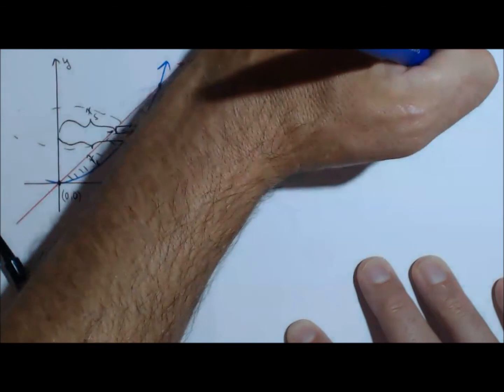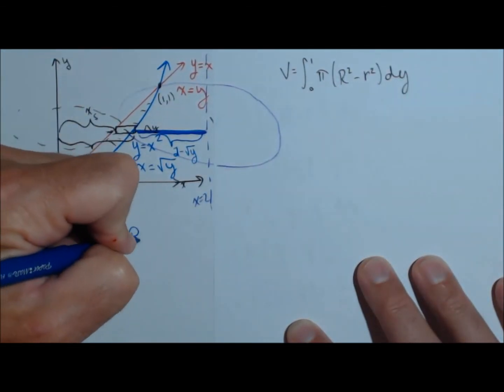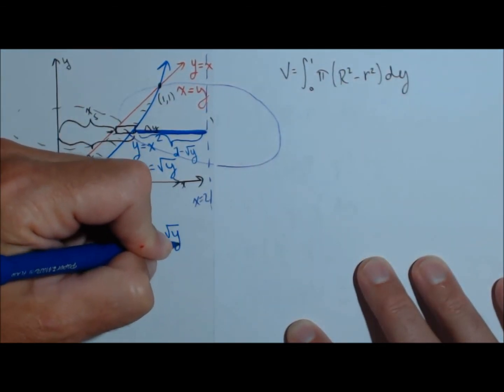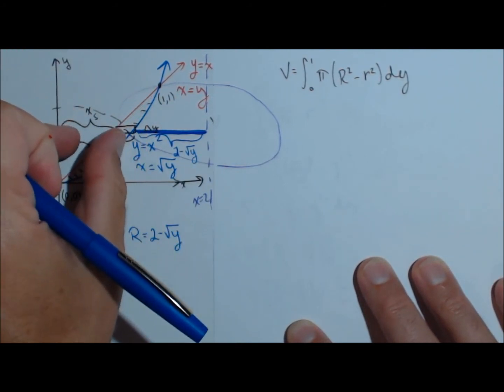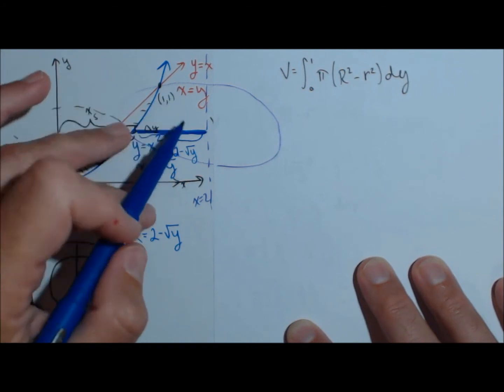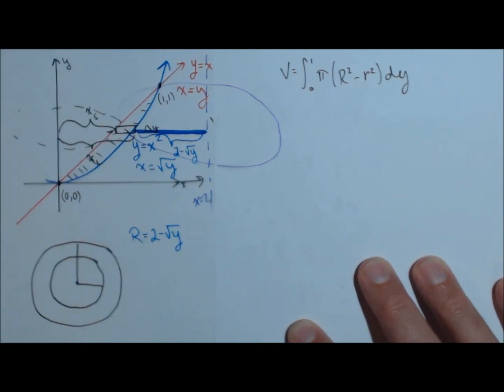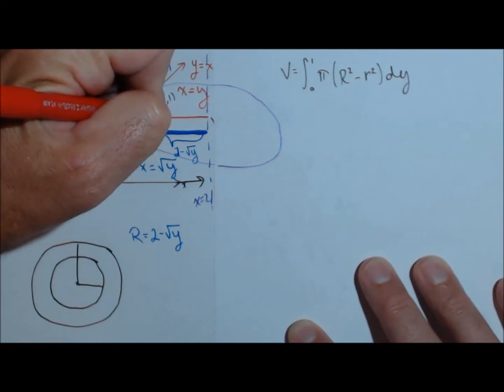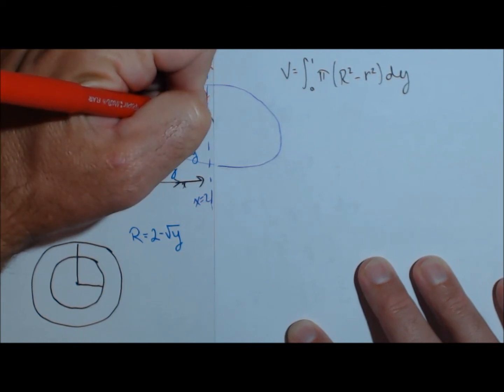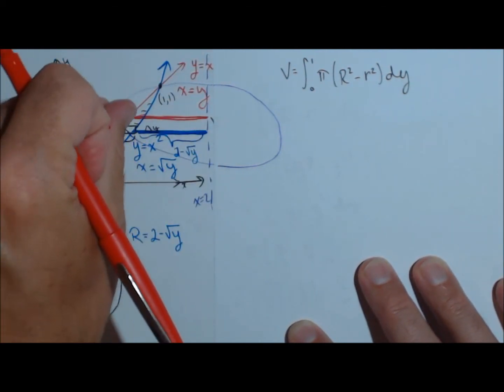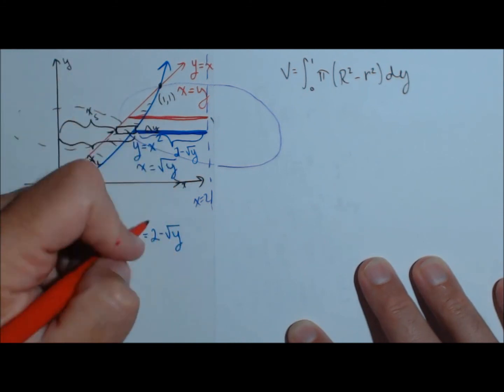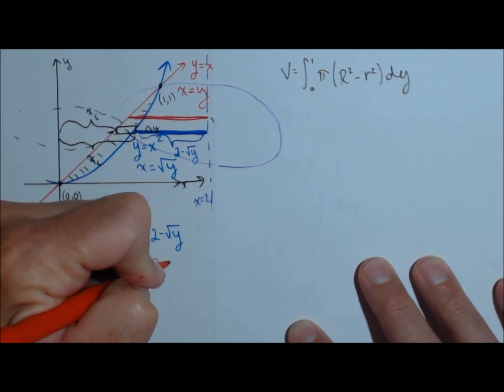So our big R, let's put it right here, is two minus square root of y. Because this whole thing is two, this here is square root of y depending on where we're at, two minus square root of y. It's very similar for our small radius. It's this line right here. Two is the whole thing. We're always going to be subtracting off whatever y is. So little radius is just two minus y.